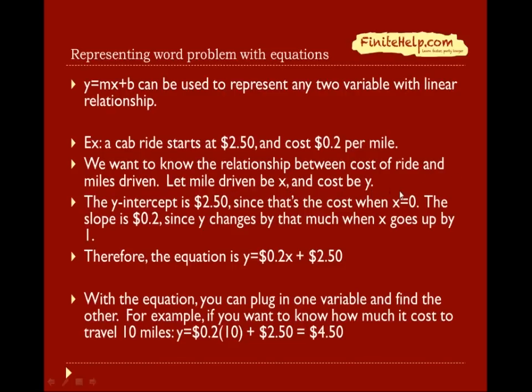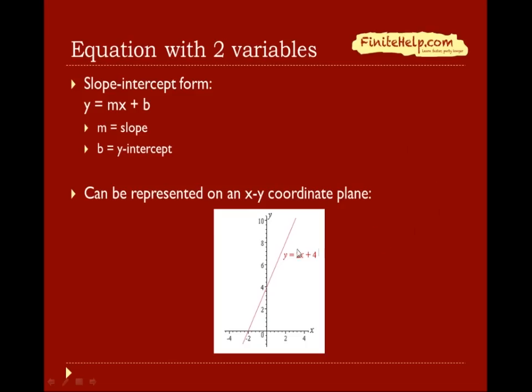Here m is the slope and b is the y-intercept, and we're going to explain both of those here in a bit. When you have an equation with two variables, you can represent that on an xy-coordinate plane. And in this class, you're only going to worry about linear equations, which does just mean that y and x don't have a power on it. Here's y equals 2x plus 4 and that can be represented by a line lying on the xy-coordinate plane.